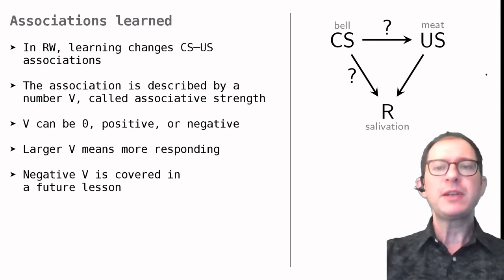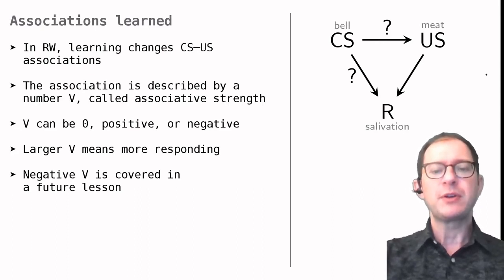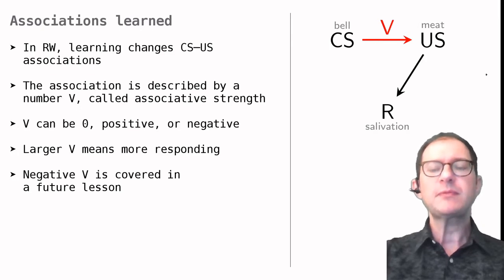RW assumes that Pavlovian conditioning depends on the growth of a CS-US association. The CR is assumed to be an automatic consequence of the growth of this association. This is an assumption we will discuss more in depth in a future lesson.